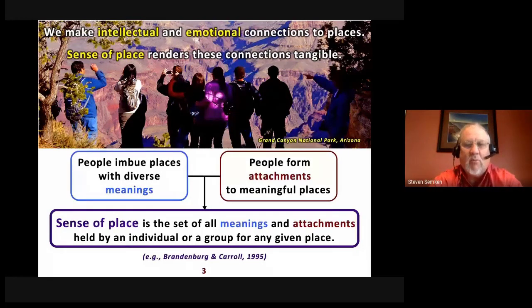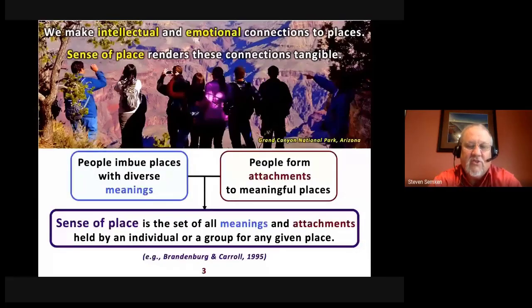Geographers define sense of place as the set of all meanings and attachments held by an individual or a group for any given place. What's special about place is that we can talk about what might seem to be an abstract concept, but sense of place actually renders these connections quite tangible. We can characterize, describe, and even measure sense of place through surveys, interviews, or simply observing how people interact in a place — like the geology students from Arizona State University interacting with the Grand Canyon shown here.